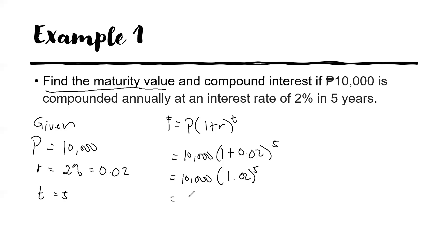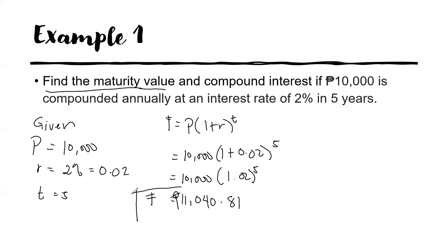If we're going to solve this using your calculator, just key in 10,000 times 1.02 raised to 5. The future value is equal to 11,040.81 pesos. This is the future value.